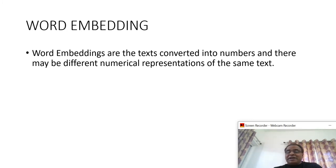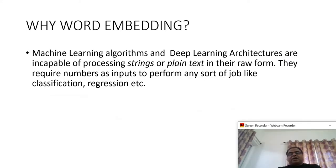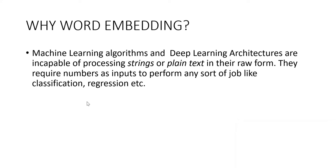So what is word embedding? Word embeddings are text converted into numbers, and there may be different numerical representations of the same text. Why do we need word embedding? Machine learning algorithms and deep learning architectures are incapable of processing strings or plain text in their raw form. They require numbers as inputs to perform any sort of job like classification or regression. That is why we use word embedding.